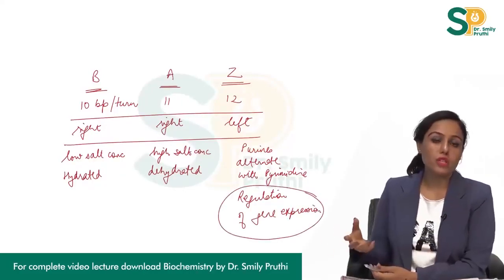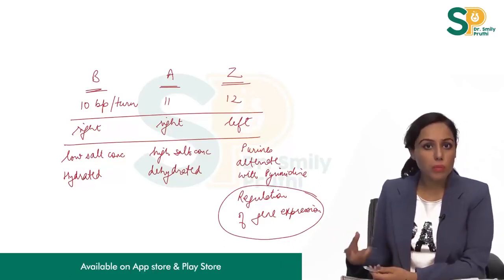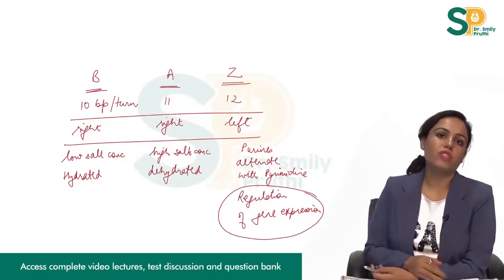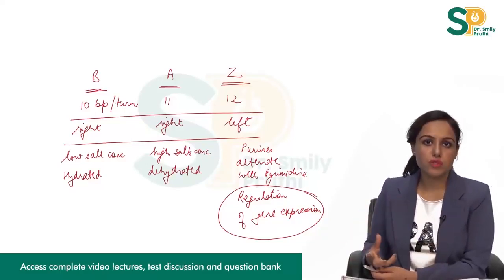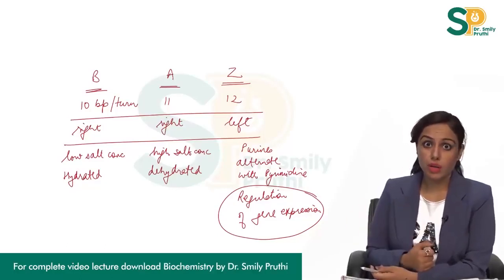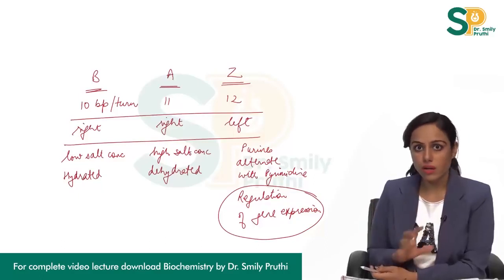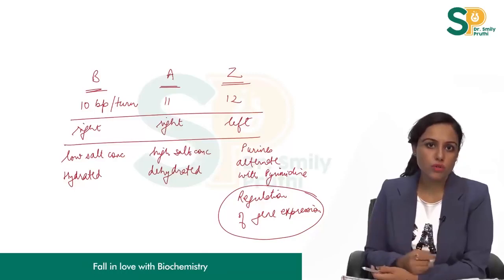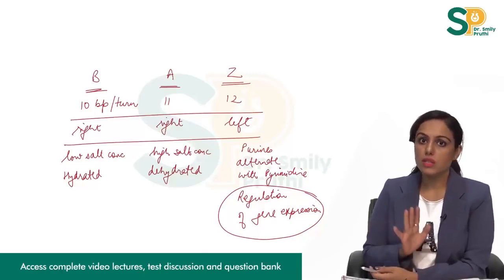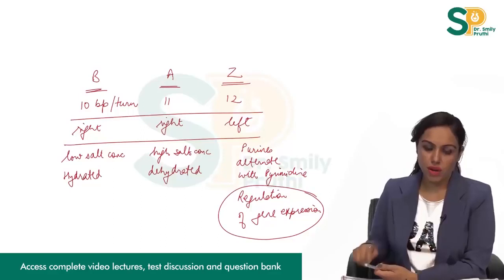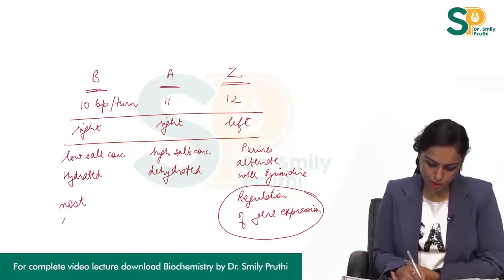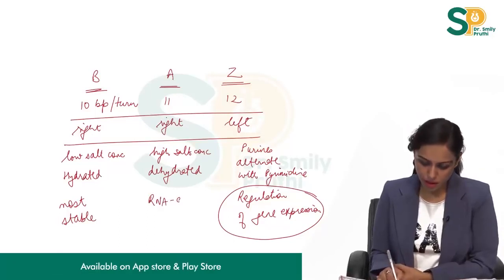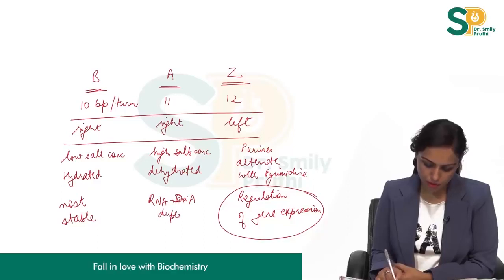B DNA is found in low salt concentrations and in a hydrated environment. A DNA is present in high salt concentrations and in a dehydrated environment. Z DNA is present in areas where purines alternate with pyrimidines, and those areas are responsible for the regulation of gene expression. B DNA is the most stable form of DNA, and A DNA is present when an RNA-DNA duplex is formed.